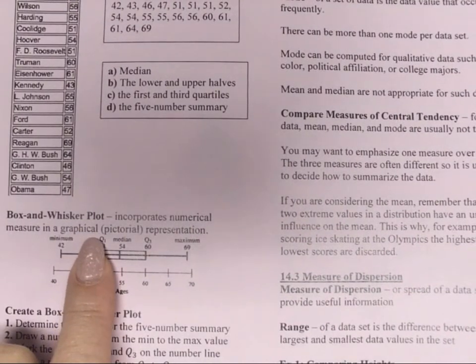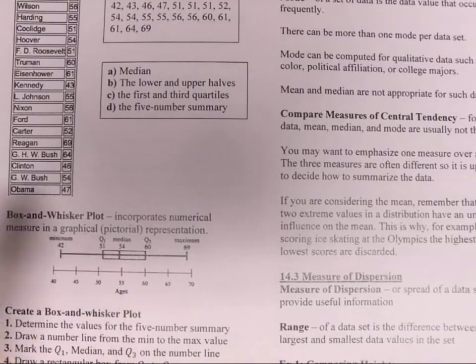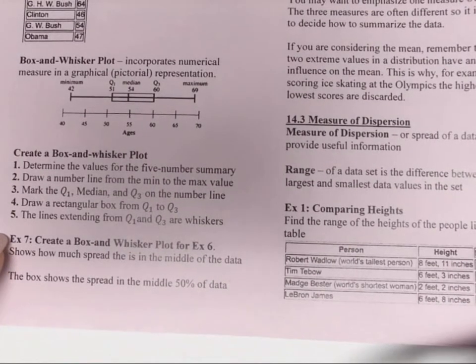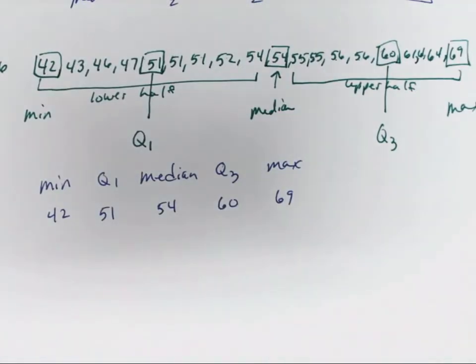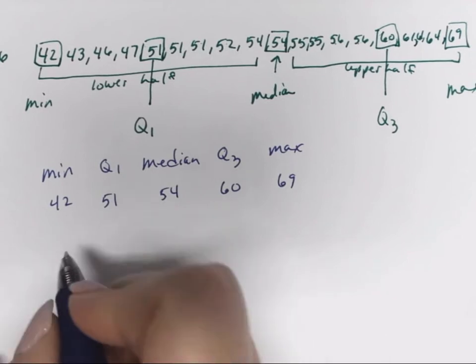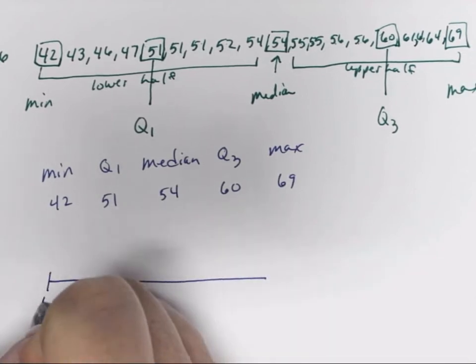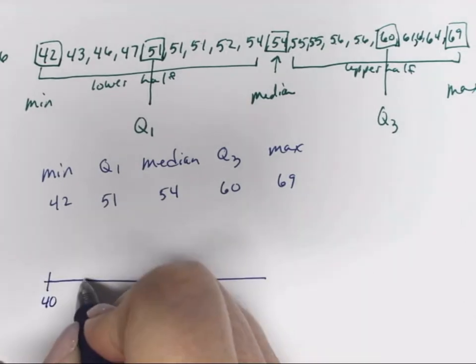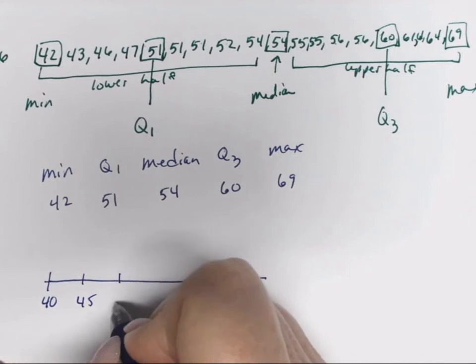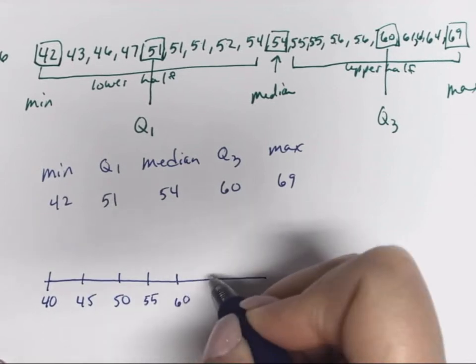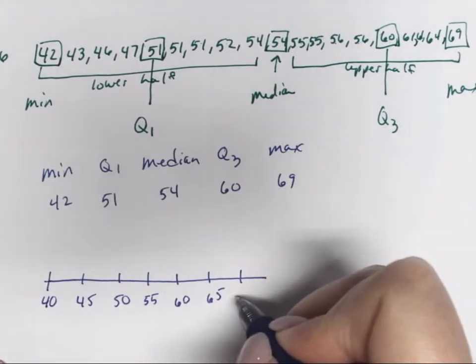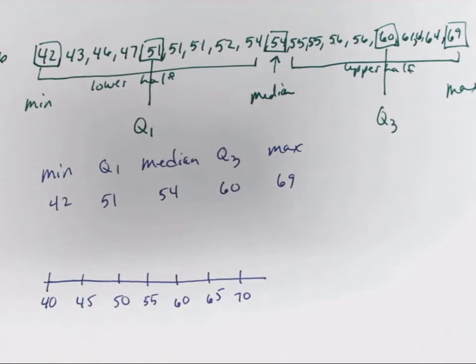We're going to use that five-number summary to do something that's called the box and whisker plot. It incorporates the numerical measure in a graphical pictorial presentation so we can see that. We have to find all the values we already did, and now we're going to create that box and whisker to show how much the spread is in the middle of the data. I'm going to draw a number line to start with. We're going to start at 40, and then 45, and 50, and 55, and 60, and 65, and then up to 70.